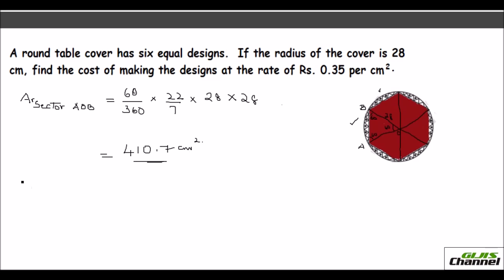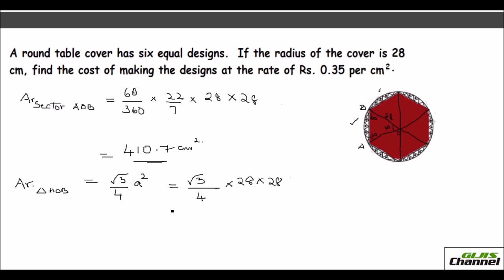Now find the area of triangle AOB. Since it is an equilateral triangle, use the formula √3/4 × a², where a = 28 (the radius). This gives √3/4 × 28 × 28 = 339.5 cm².